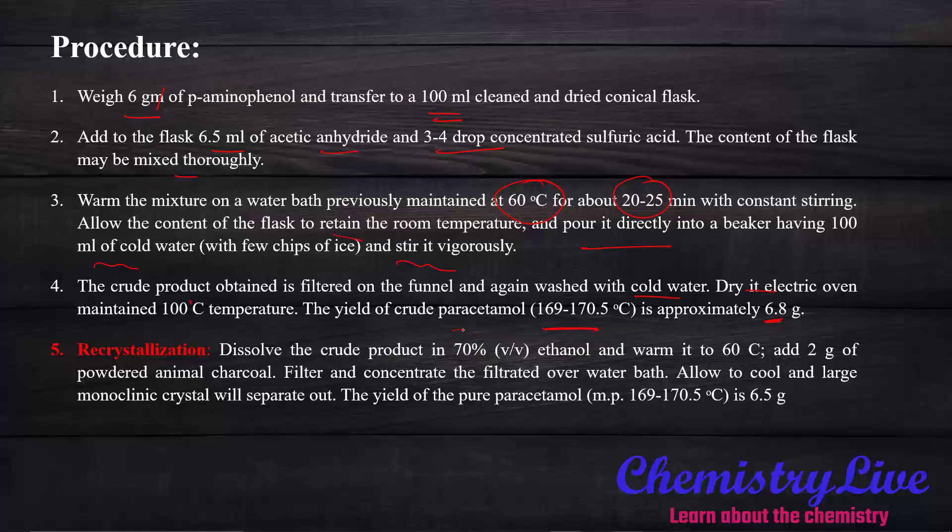For recrystallization, dissolve the crude product in 70% ethanol and warm it to 60 degrees Celsius. Add 2 grams of powdered animal charcoal to remove color impurity. Filter and concentrate over a water bath. Allow to cool and large monoclinic crystals separate out. The yield is 6.5 grams and the melting point is 169 to 175 degrees Celsius, as obtained in the crude product.